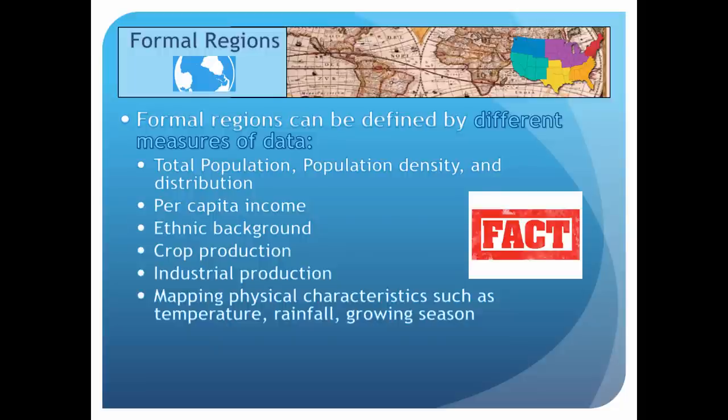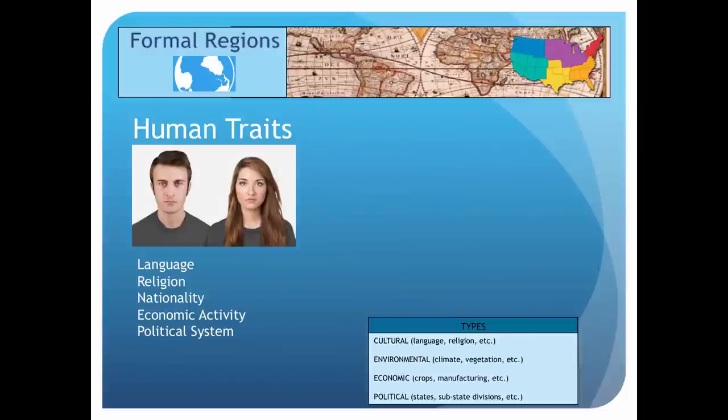Geographers collect data to prove that formal regions exist. Formal regions can be defined by many different measures, including total population, population density, distribution, per capita income, and so on. They can also include physical mapping characteristics like temperature, rainfall, or growing seasons. Formal regions also include human characteristics like language, religion, nationality, economic activity, or political systems.